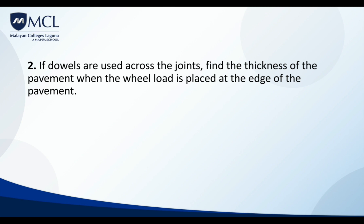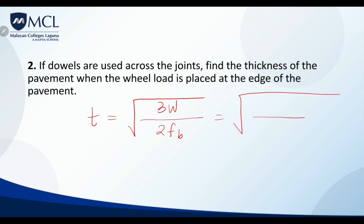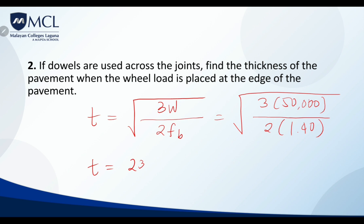For question 2, with dowels and wheel load at the edge, we use T = √(3W / 2FB). Substituting the wheel load and tensile stress into the formula gives a thickness of 231.46 mm.